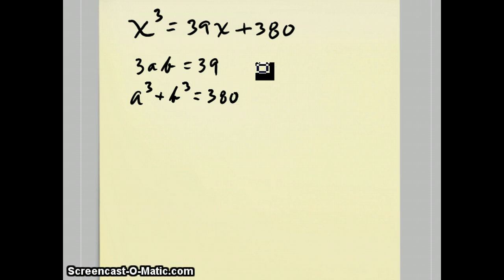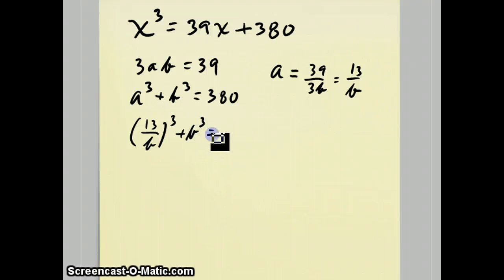And the process is to use substitution by solving for a in terms of b. We get a equals 39 over 3b, which is 13 over b. We substitute that a into the a here in the a cubed, so 13 over b cubed plus b cubed equals 380.